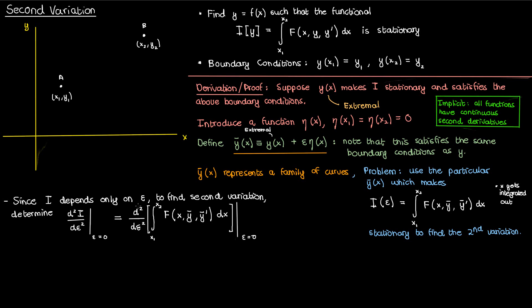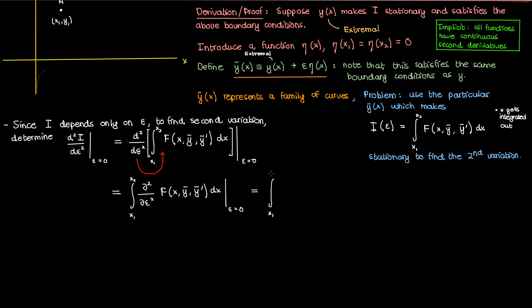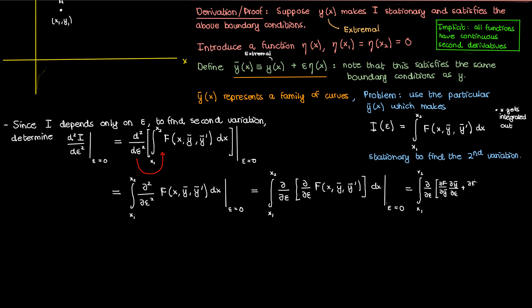So let's plug in the integral expression for i and take its second derivative with respect to ε. Since the integrand is nice, continuous, and differentiable, we can move this derivative inside the integral. And since the expression inside the integral is a function of multiple variables besides ε — variables that haven't yet been integrated out — this ordinary derivative becomes a partial derivative inside the integral. I can then rewrite the second partial derivative as the partial derivative of the partial derivative. Using the chain rule, the partial derivative of capital F with respect to ε is given by ∂F/∂y-bar · ∂y-bar/∂ε plus ∂F/∂y-bar-prime · ∂y-bar-prime/∂ε.